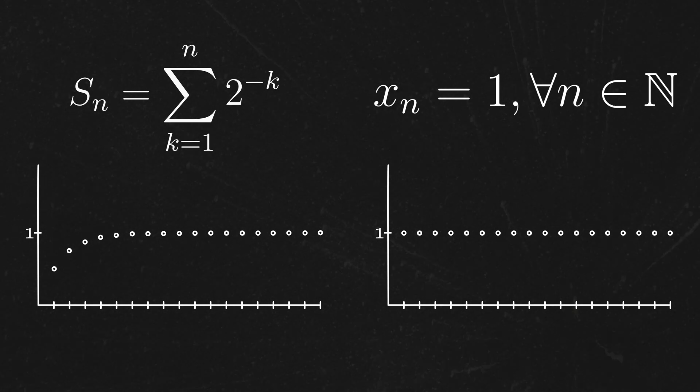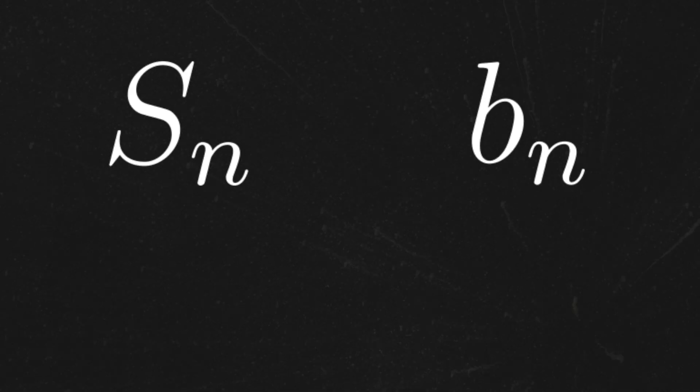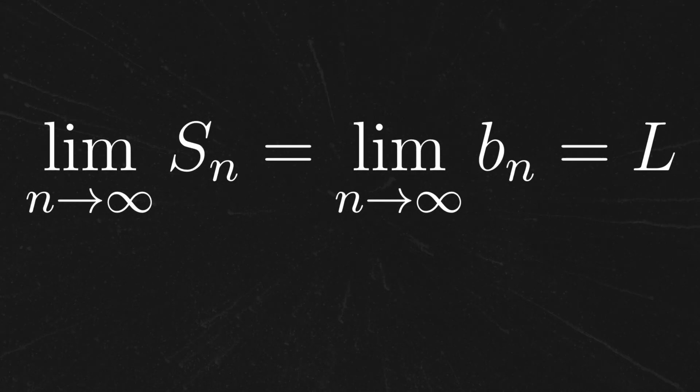We have an idea about how these real numbers ought to behave. So skipping ahead again, just to gain some inspiration, let's suppose we had two sequences, a sub n and b sub n, and suppose that they both converge to the same number, potentially real, L.